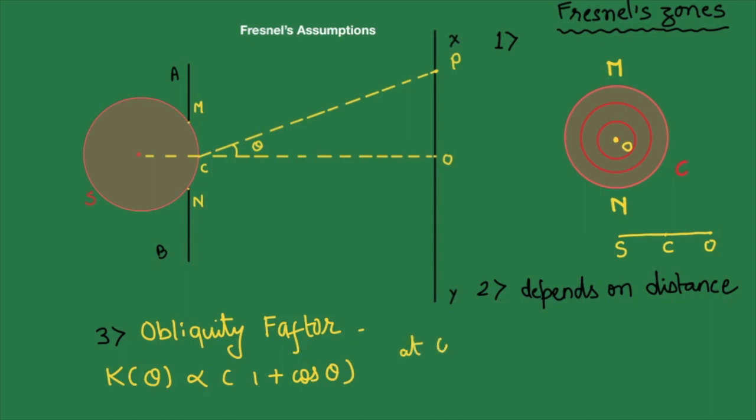So first at point O, how much is our theta? At point O, theta is 0 degrees. So this 1 plus cos theta term would be at 0 degrees, cos 0 is 1, so it would be 2.